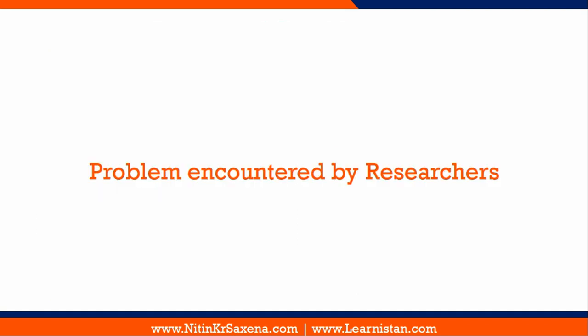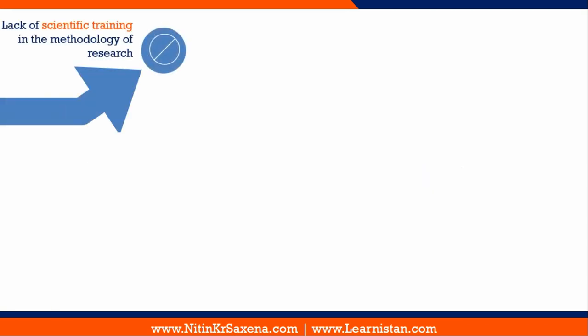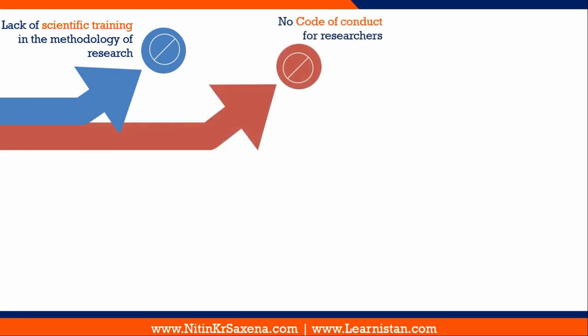Next are the problems encountered by researchers. The first problem is the lack of scientific training in the methodology of research. Across the globe, researchers are facing the problem of insufficient scientific training given to them on methodology. Second, there is no code of conduct for researchers — no strictly or clearly defined code of conduct. This leads to plagiarism, copying of research, and publishing the research of one researcher in the name of another, all of which demotivate researchers.